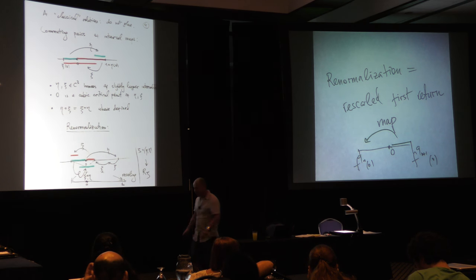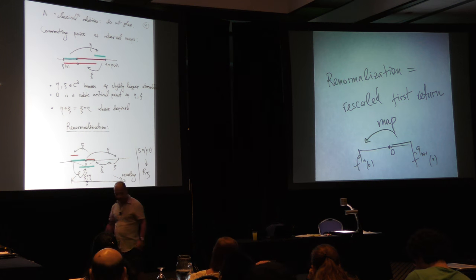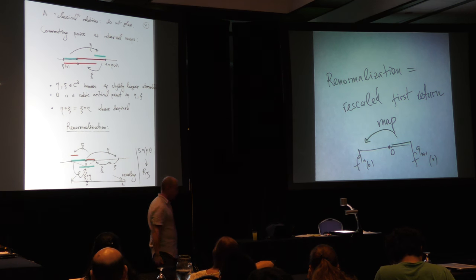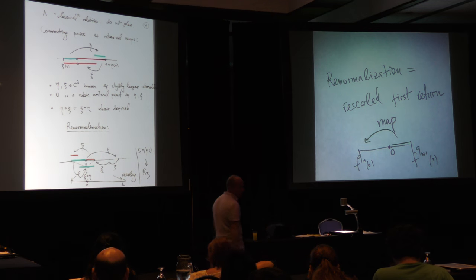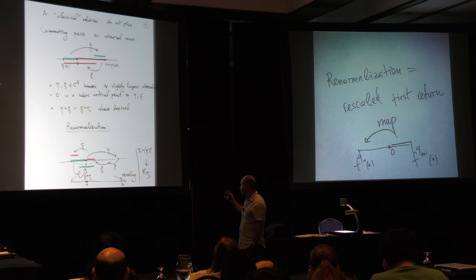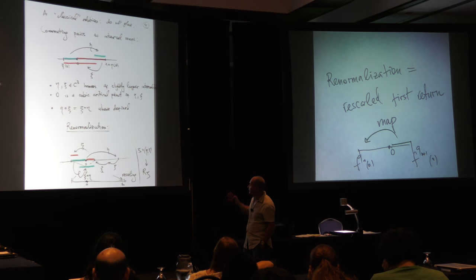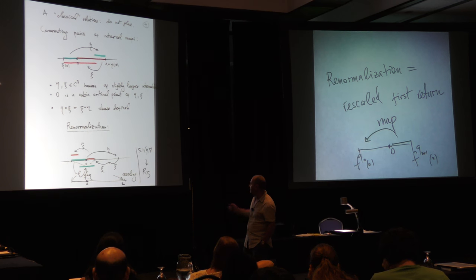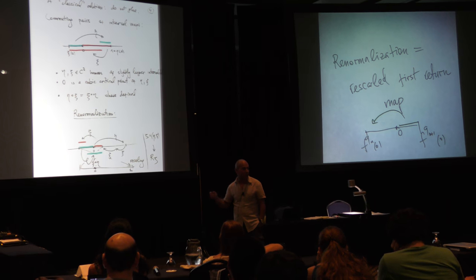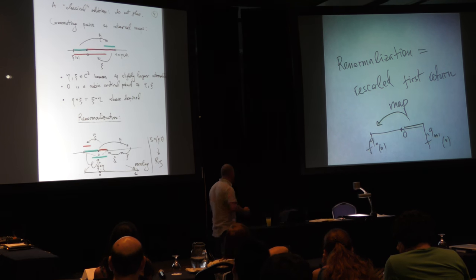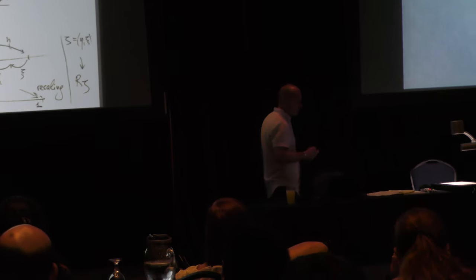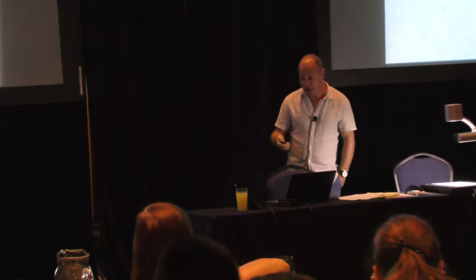There are many papers on this going back to the end of the 1970s and early 1980s, and I won't attempt to survey the history. There is a brief survey in my old paper on hyperbolicity of renormalization of critical circle maps, if you're interested.